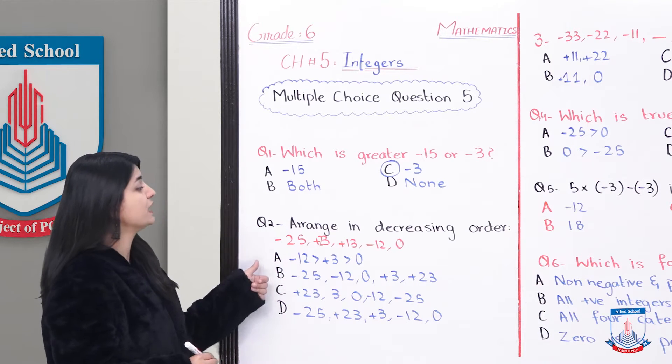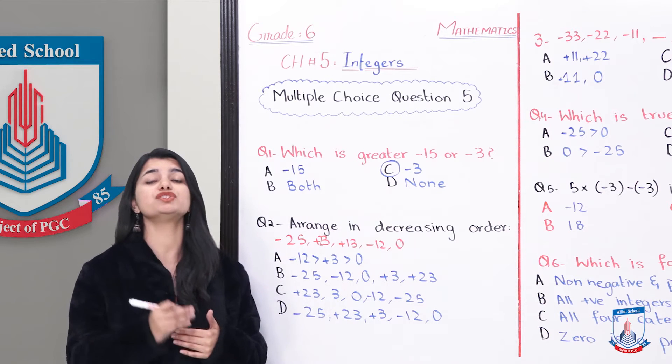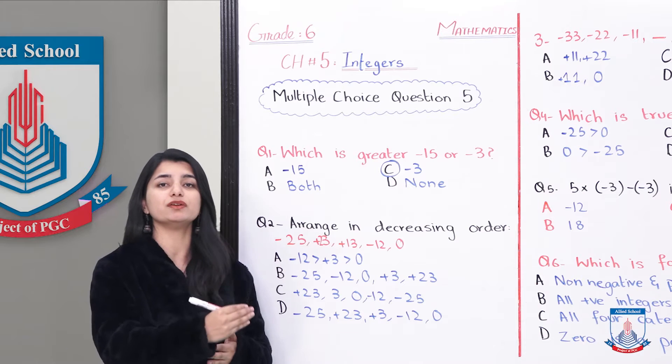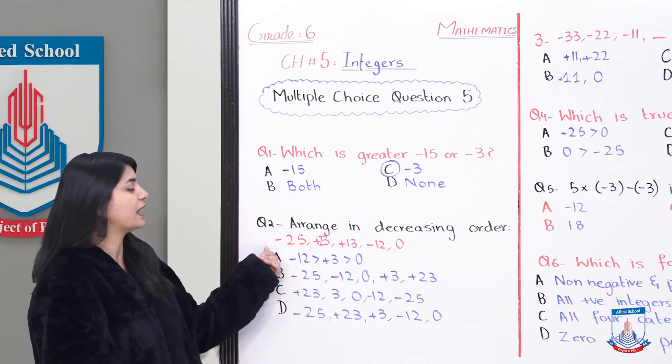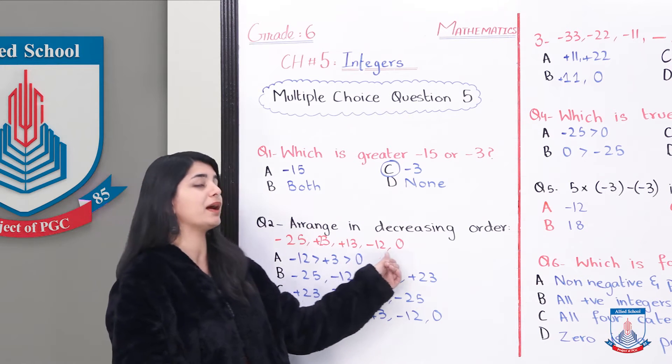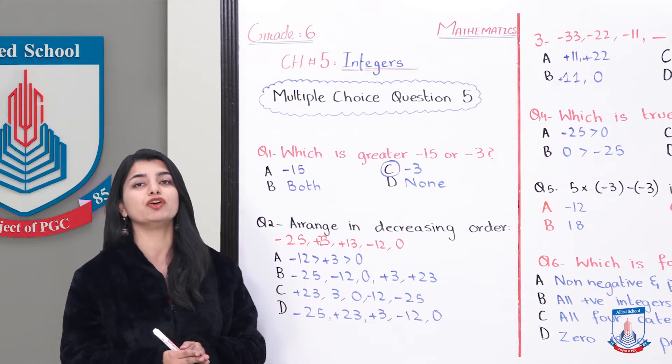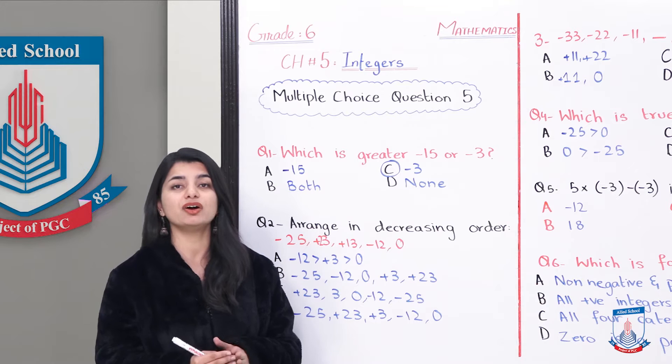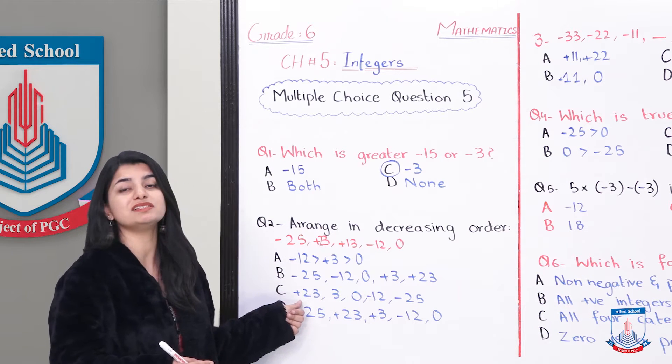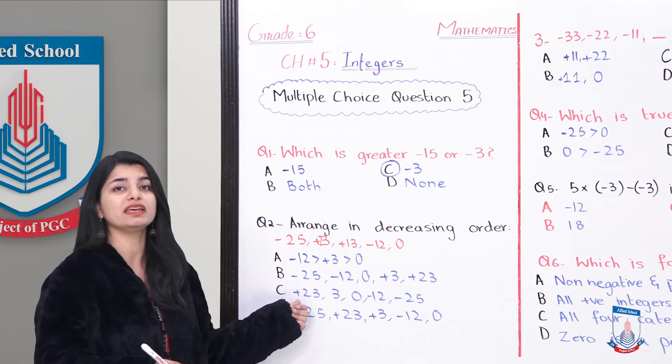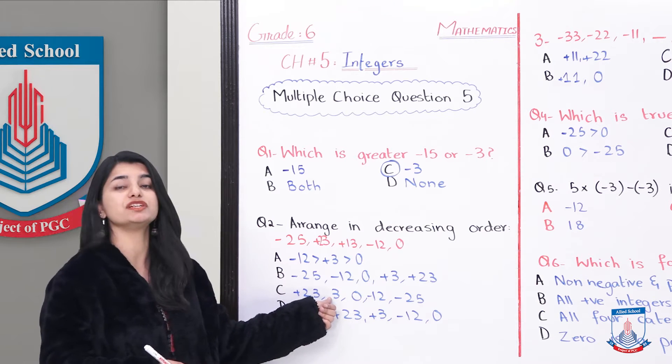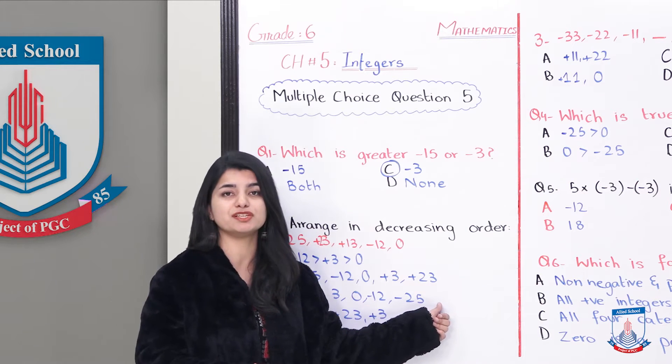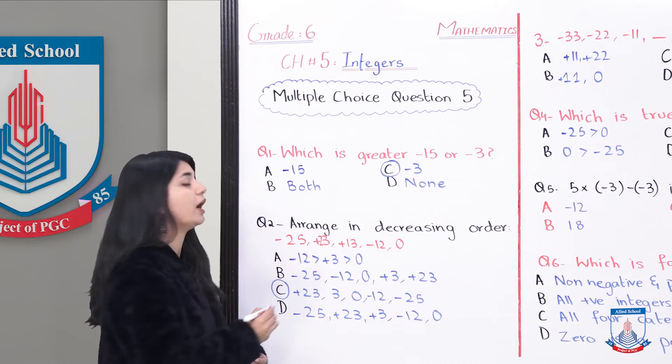In the second MCQ we need to arrange in decreasing order. Decreasing means from the biggest number then it is small, then small, then small. So if you look at it, we have negative 25, positive 23, positive 13, minus 12 and 0. First of all, we have to select the biggest number. It needs to be positive and have a big number. In positive, we have 23 and 13. Which is the biggest number? Obviously 23. So first of all, 23, which is option C. Then we have 13, which is smaller, then 0, which is smaller, then minus 12, which is smaller, and negative 25, which is smallest. So obviously option C is the correct option.